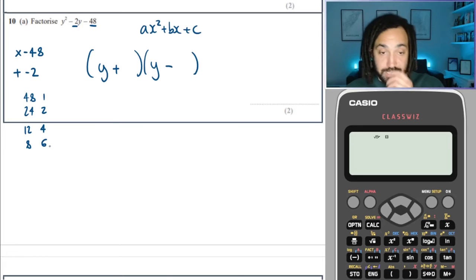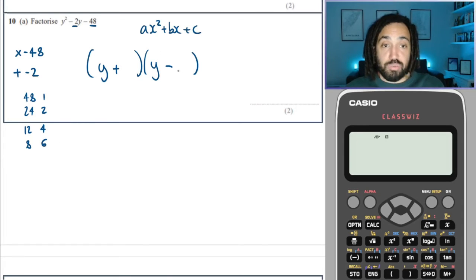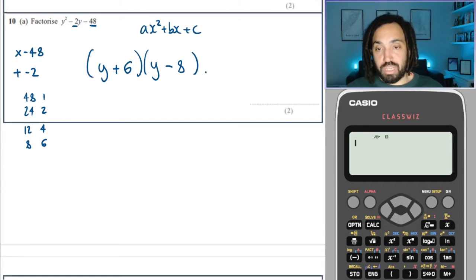We could have eight and six. Now that is looking promising, because that has a gap of two. So if we make the negative one, eight, and then the positive one, six, they will add to make minus two. Perfect. That is factorized.